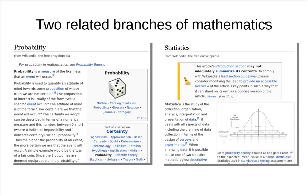Probabilities and statistics are related branches of mathematics. They are pretty related, but not exactly the same. In this clip, I would like to talk a little bit about what they are about, and we'll see that they are really related, but not the same.